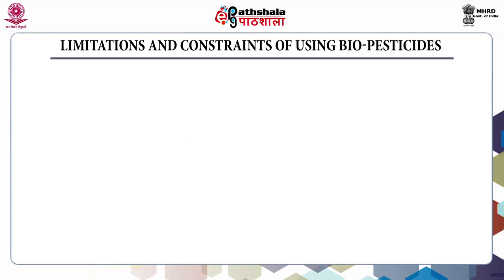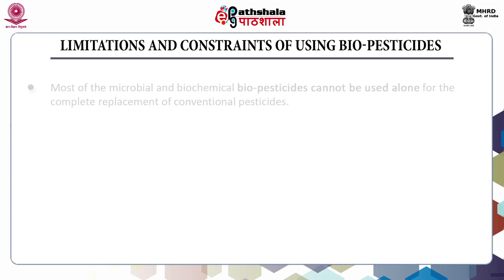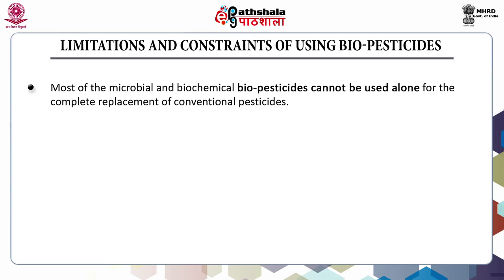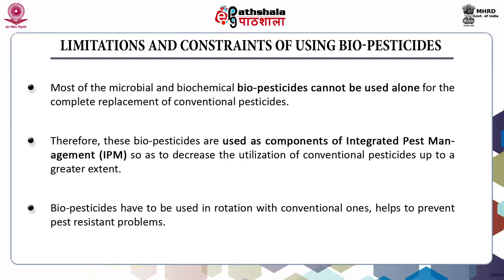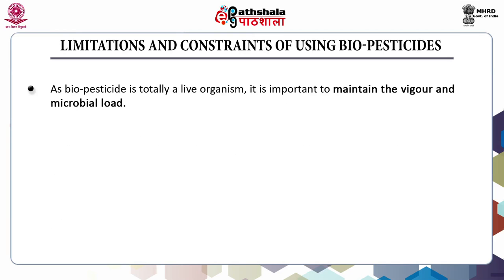Coming to the limitations and constraints of biopesticides: most microbial and biochemical biopesticides cannot be used alone for the complete replacement of conventional pesticides. Therefore, these biopesticides are used as a component of integrated pest management so as to decrease the utilization of conventional pesticides to a greater extent. Biopesticides have to be used in rotation with conventional products and they help to prevent pest resistance problems. As biopesticide is a living organism, it is very important to maintain the vigour and microbial load.